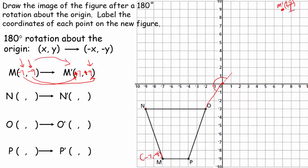Let's take a look at N. N is at negative 9, negative 3. After a 180 degree rotation, I change the sign — each sign becomes its opposite. So the x-coordinate, which is negative 9, becomes positive 9. The y-coordinate started as negative 3 and now becomes its opposite, which is positive 3. So N prime has to be located at 9, 3. And that is N prime at 9, 3.